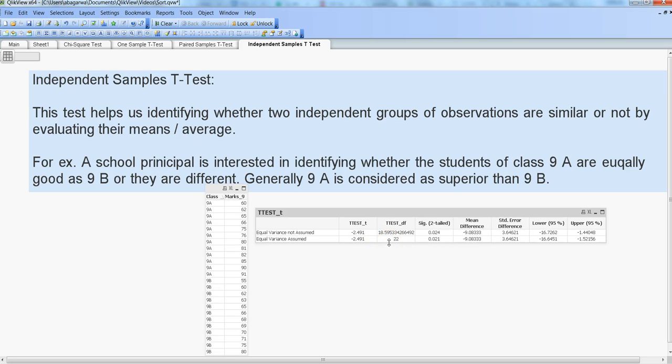And then we are getting the value as minus 2.491 again, which is beyond minus 2.074. And in this case also, we will conclude that our alternative hypothesis—that these two groups' output or the test output or these students in these two different classes of section are different with each other.